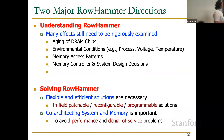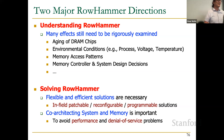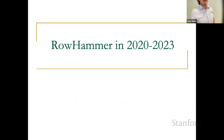Going forward, we need to understand RowHammer much more rigorously — aging, environmental conditions, memory access patterns, system design decisions all need to be examined. I think flexible, efficient, and field-programmable solutions are necessary, because you may discover new effects that weren't anticipated. Power-limiting the system and memory is also important to avoid performance and denial-of-service problems.